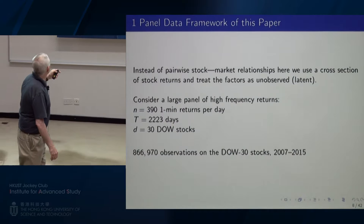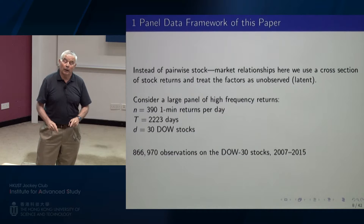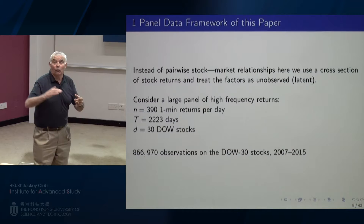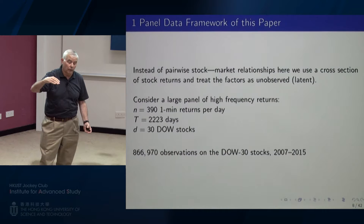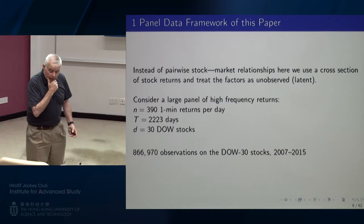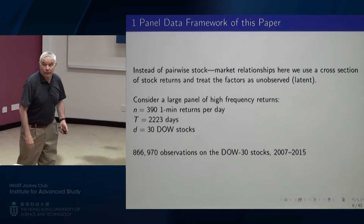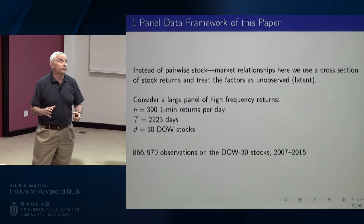In a series of previous papers, we investigated pairwise relationships between individual stocks and the measured stock market. In this paper, instead of looking at things pairwise, I'm going to use a cross-section of returns — none of which is the market itself. They're actually the returns on each of the Dow 30 stocks, so it's going to be a panel of 30 stocks at the one-minute level. We're going to think about whatever's going on in the background as latent and unobserved.